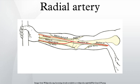The artery winds laterally around the wrist, passing through the anatomical snuff box in between the heads of the first dorsal interosseous muscle. It passes anteriorly between the heads of the adductor pollicis, and becomes the deep palmar arch, which joins with the deep branch of the ulnar artery. Along its course, it is accompanied by a similarly named vein, the radial vein.